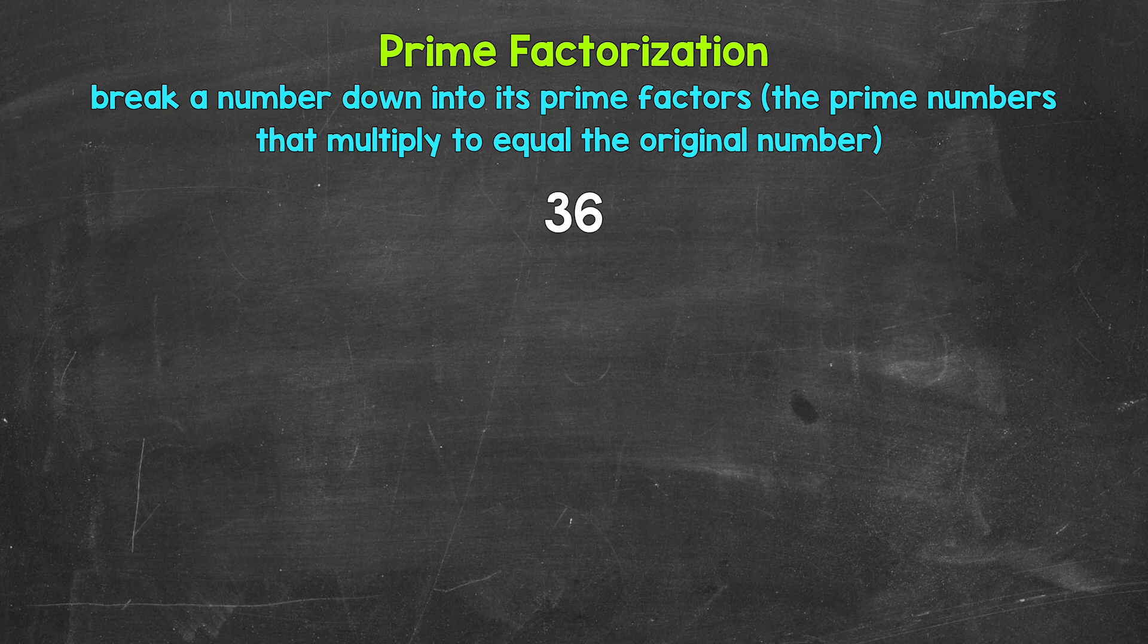So we are decomposing a number, breaking a number down to only prime numbers. So looking at 36, we need to start breaking this down by thinking of two factors, two numbers that will multiply to give us 36.